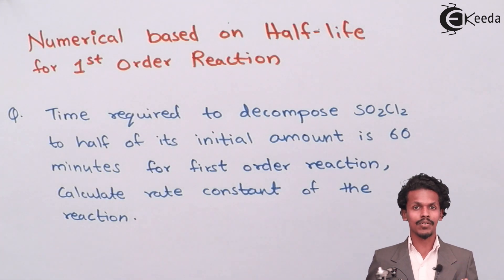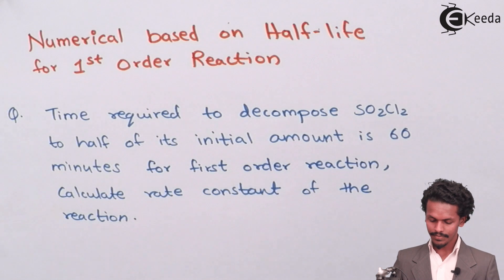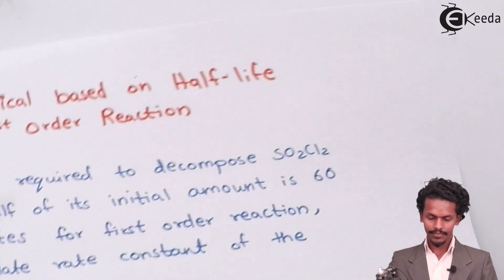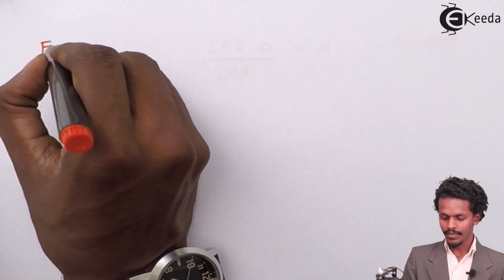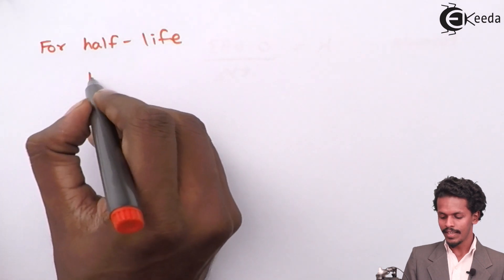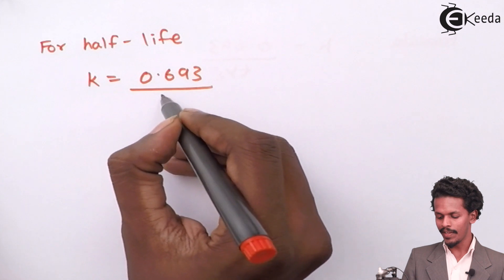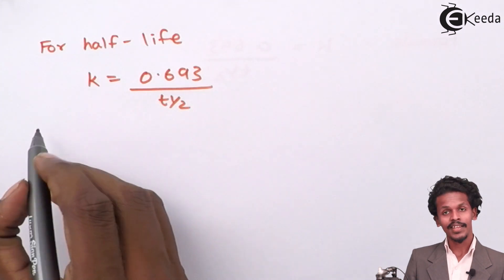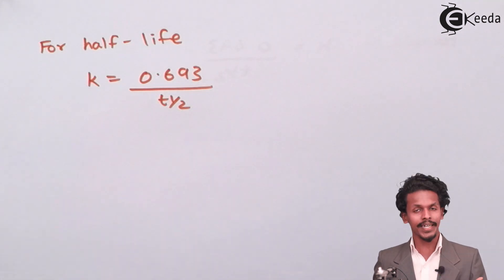We know the formula for rate constant for half-life: k = 0.693 divided by t½. In this case, t½ is given in minutes, so we will get the rate constant in units of per minute.